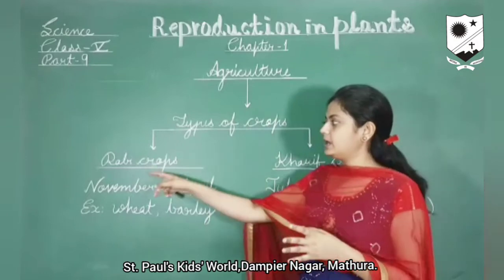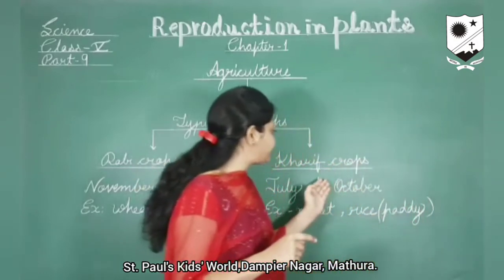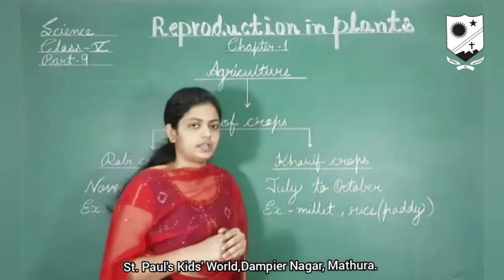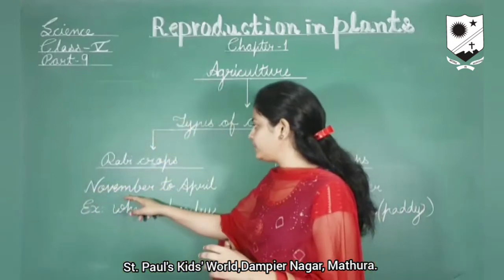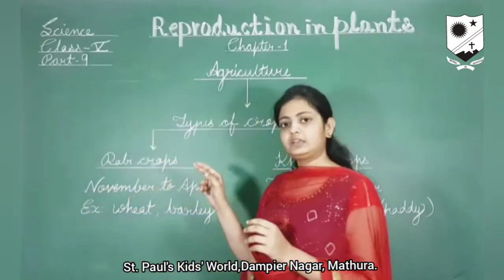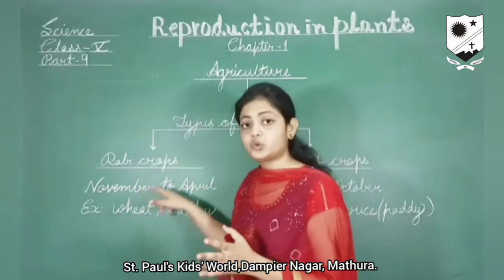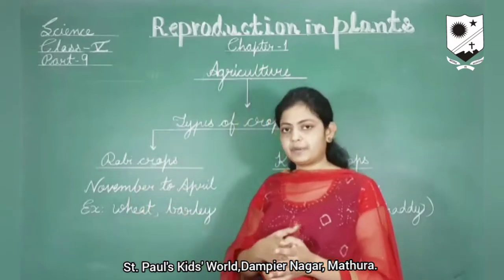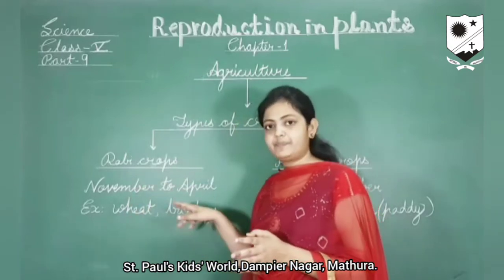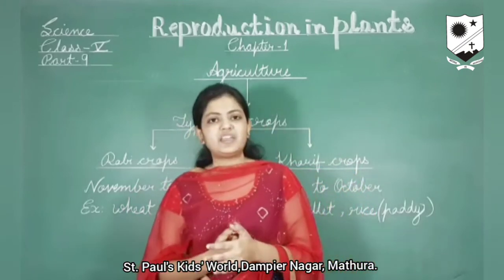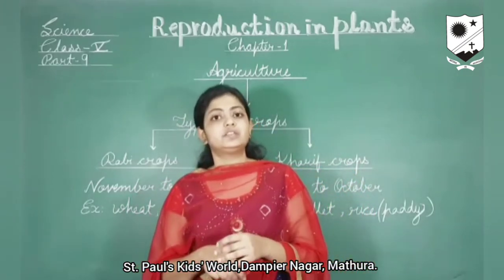The two types of crops are Rabi crops and Kharif crops. Rabi crops are grown from November to April. For example, wheat and barley. They are known as Rabi crops and are grown in winters.